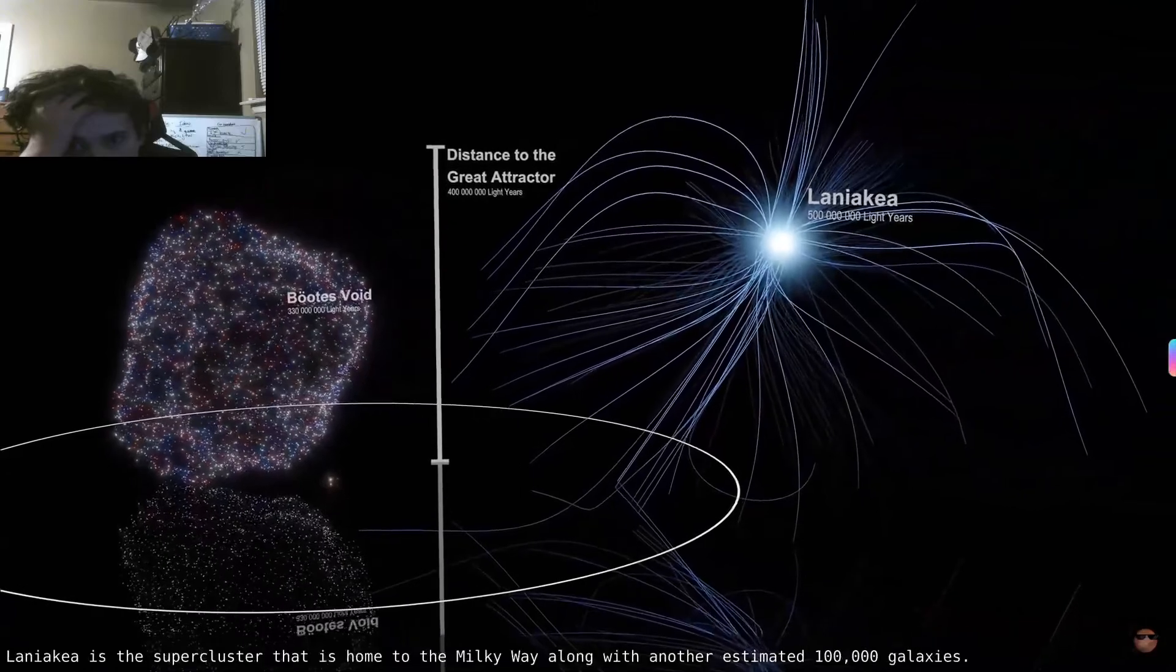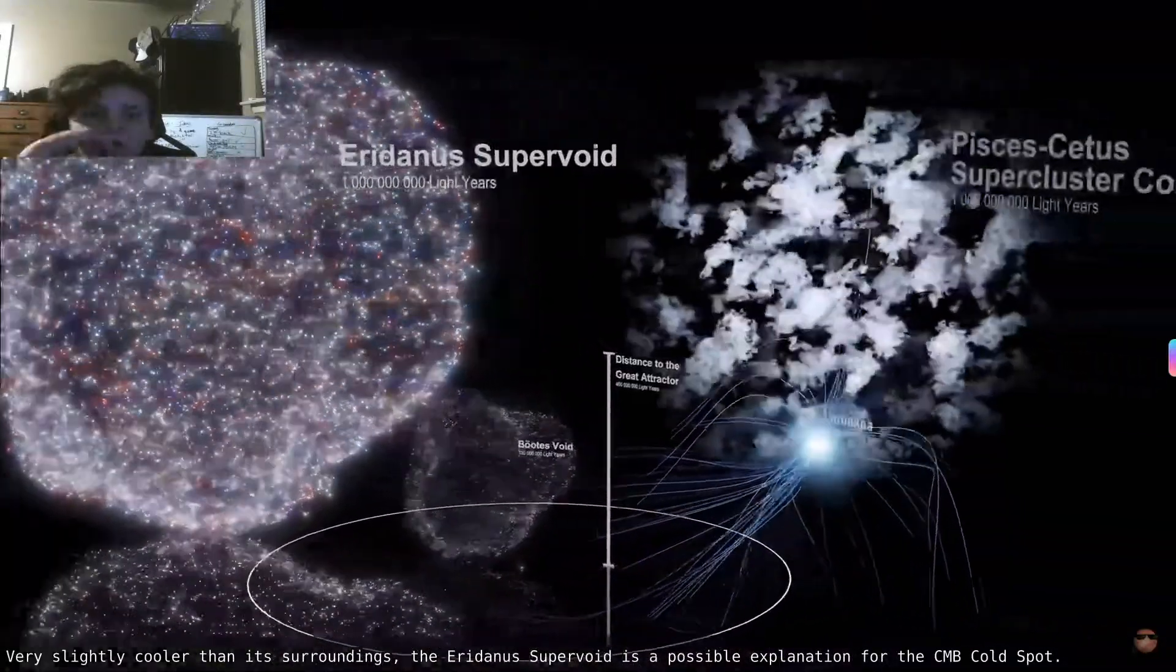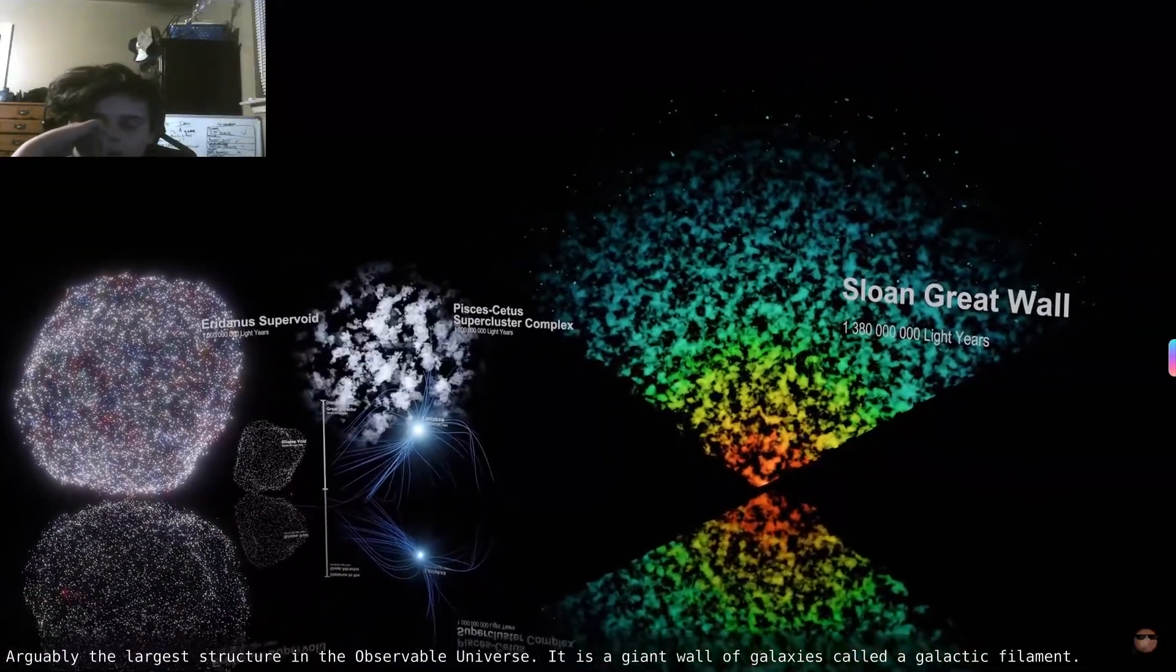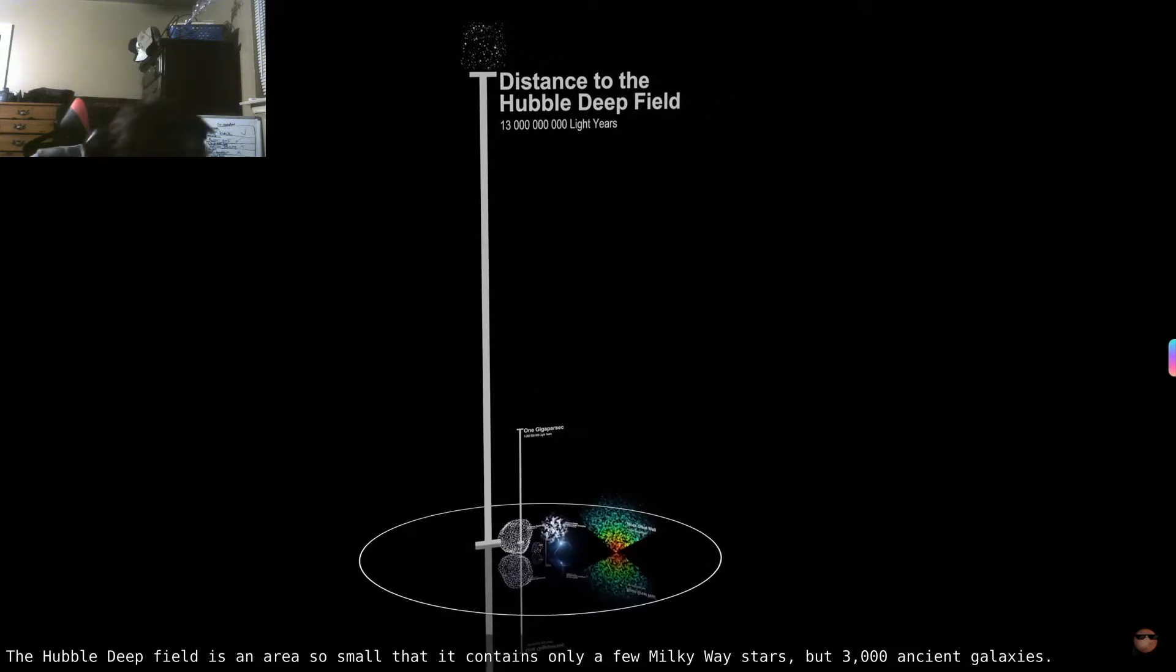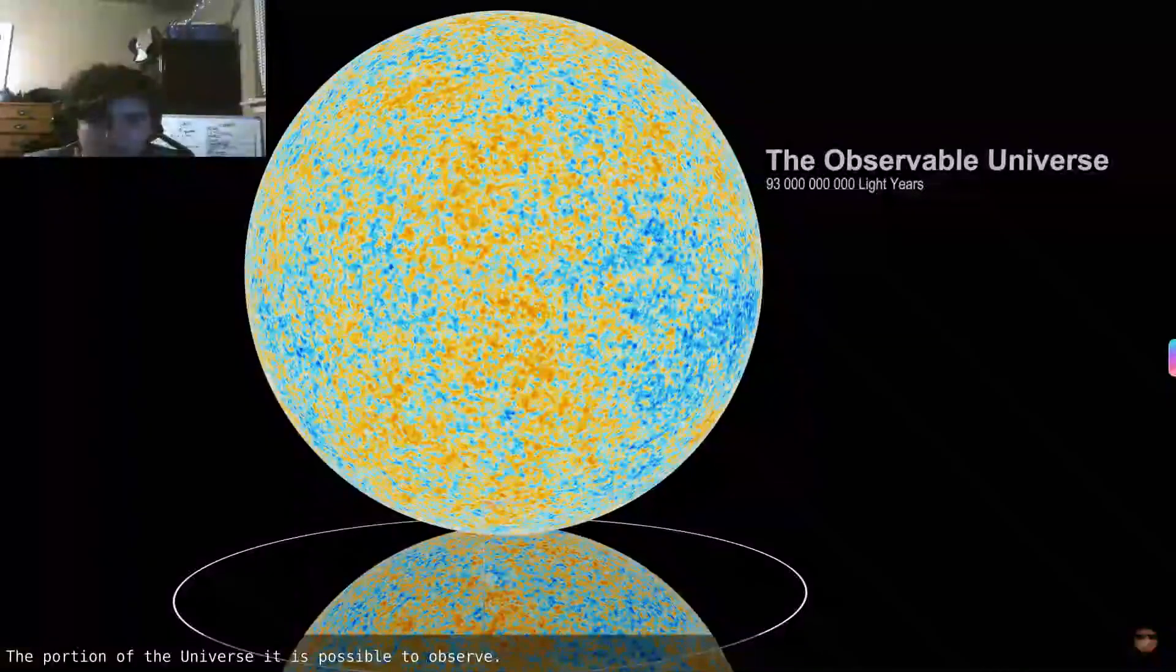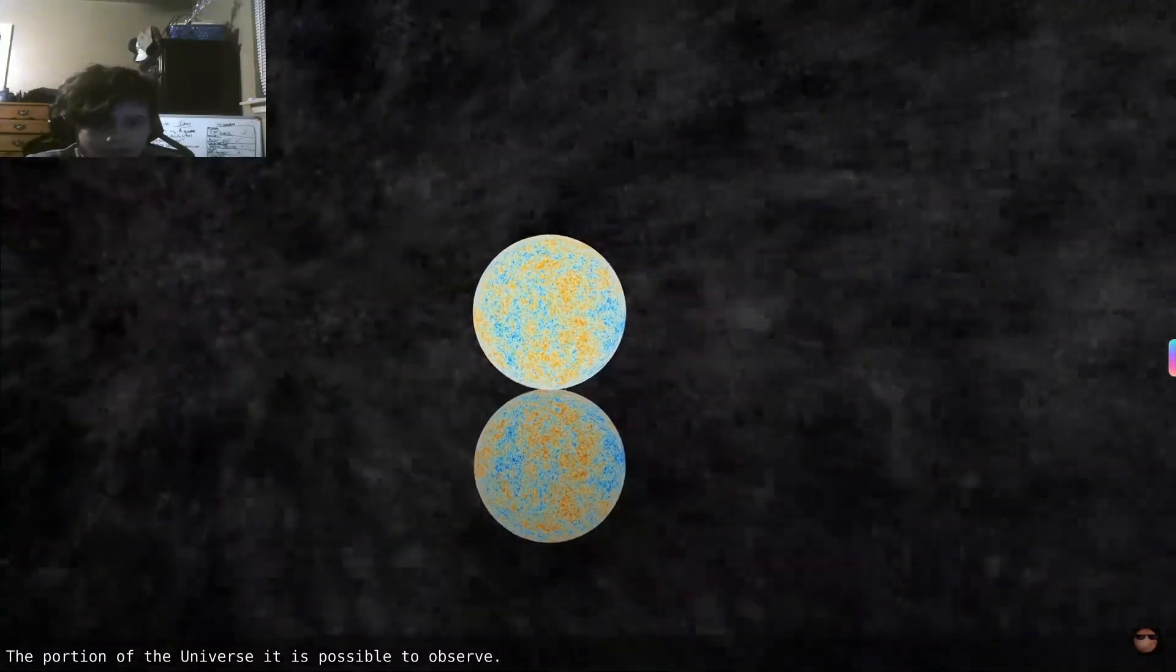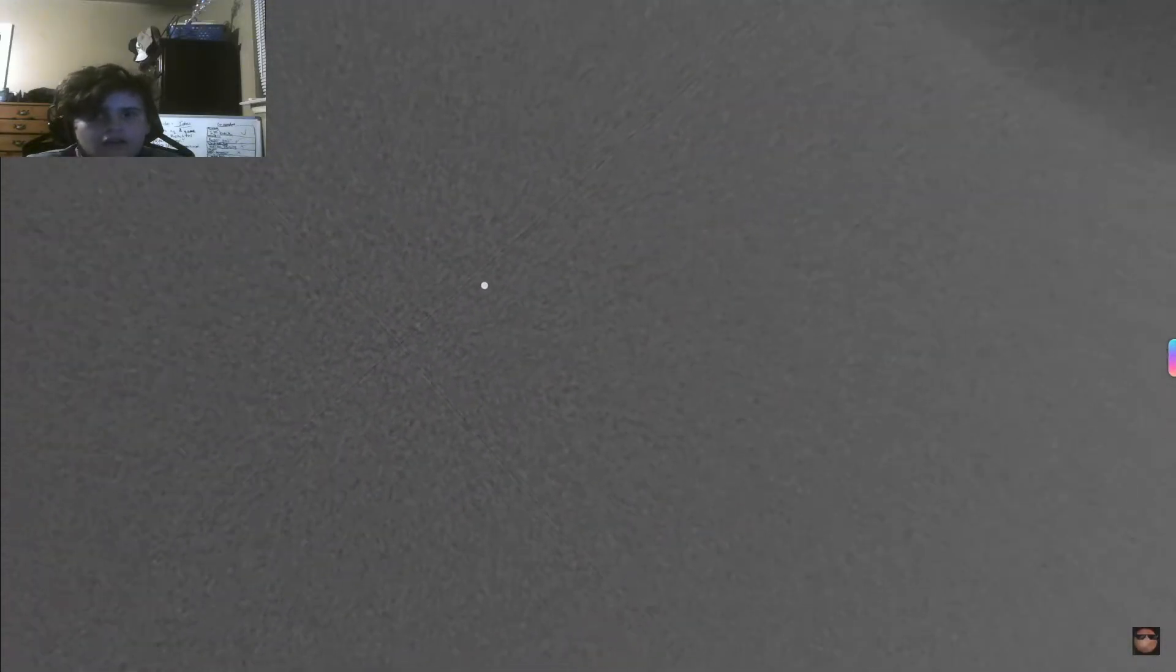What the heck is that to the right? 100,000 galaxies. How can, oh my gosh, how can stuff get, dang. The observable universe. That's our universe. There's no way there's anything that big, that much bigger than the universe.